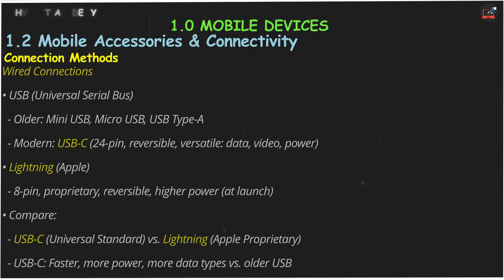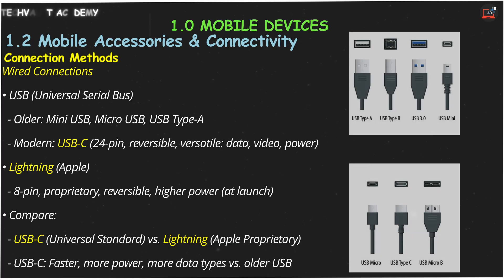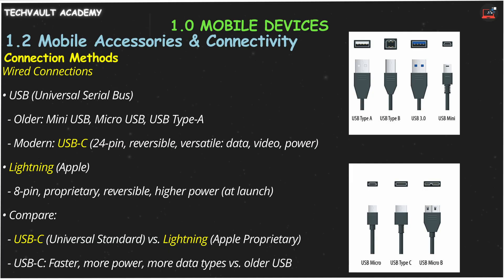We'll start with wired connections. The most common is USB, or universal serial bus — it's like the Swiss army knife of connectors. You've seen older types like mini USB and micro USB. They were popular, but a bit fiddly. And the USB type A is that familiar rectangular plug you find on computers.